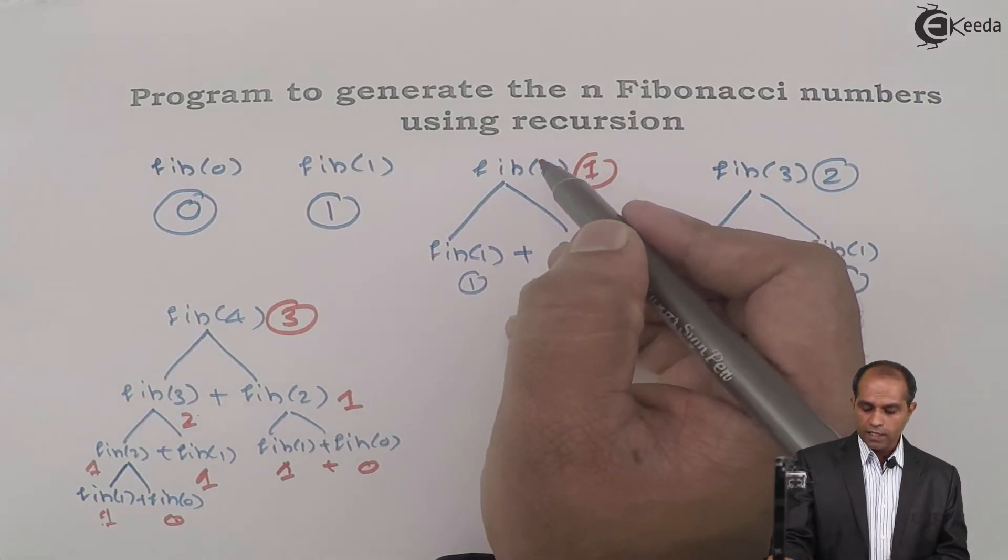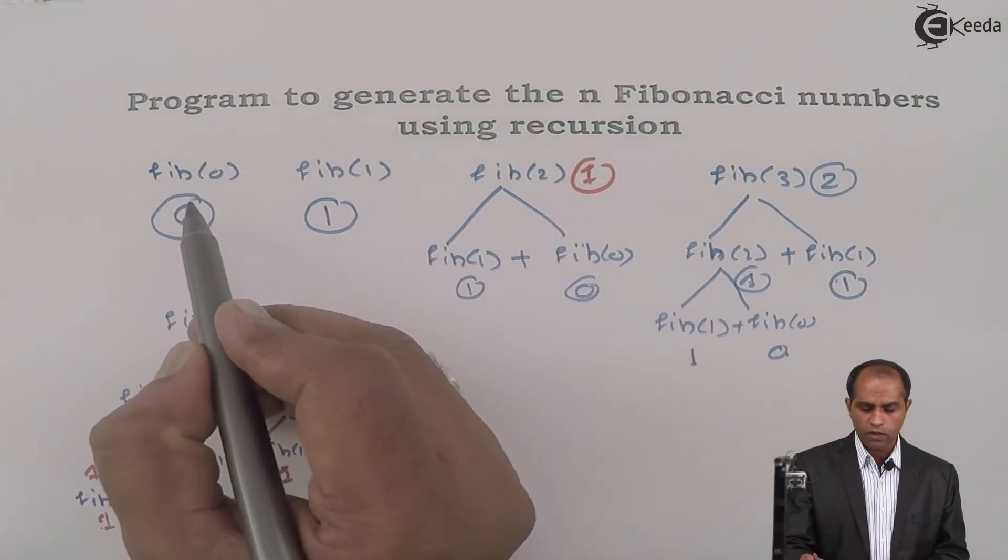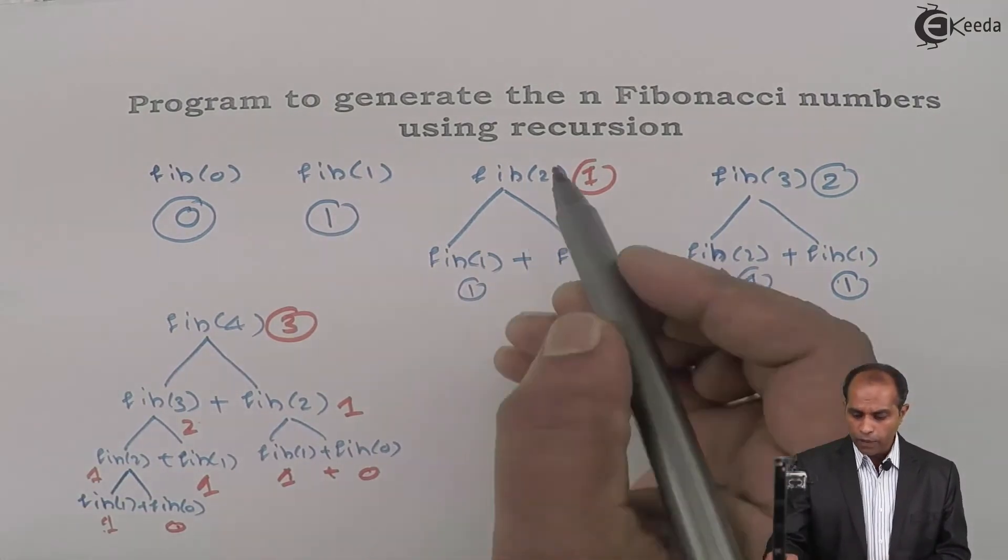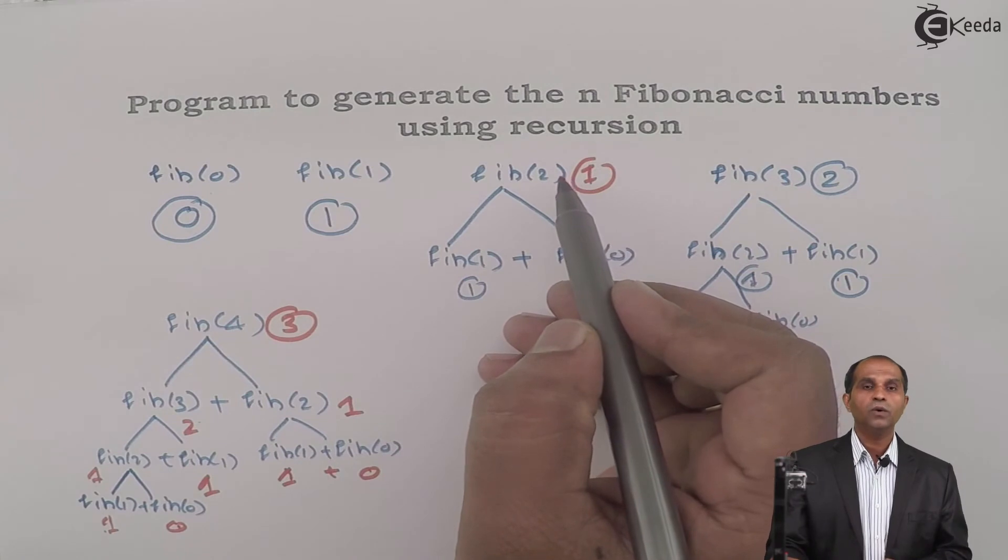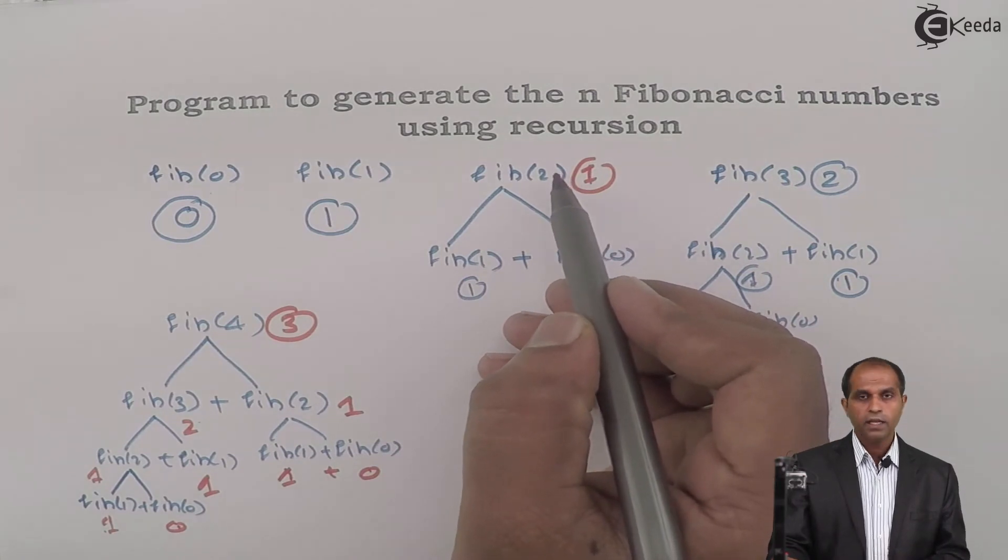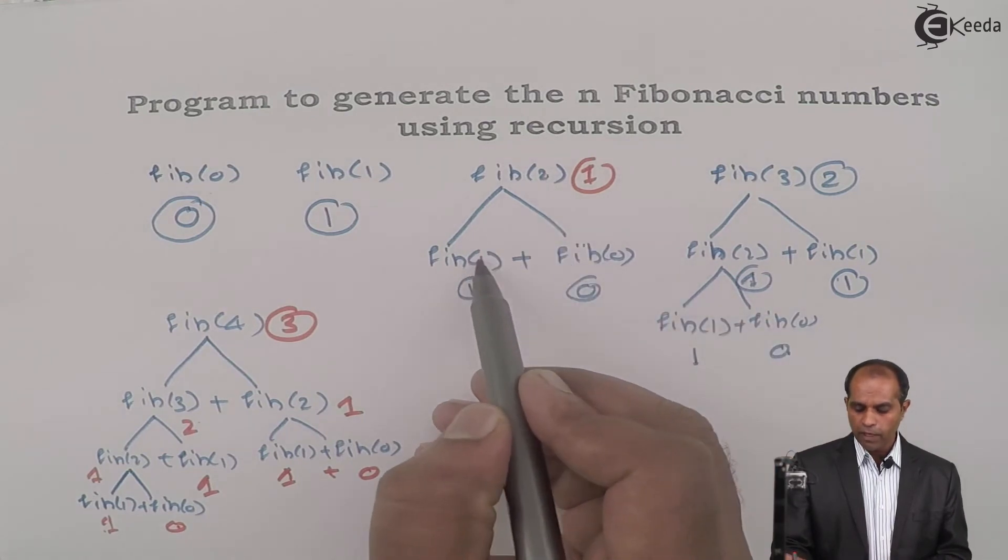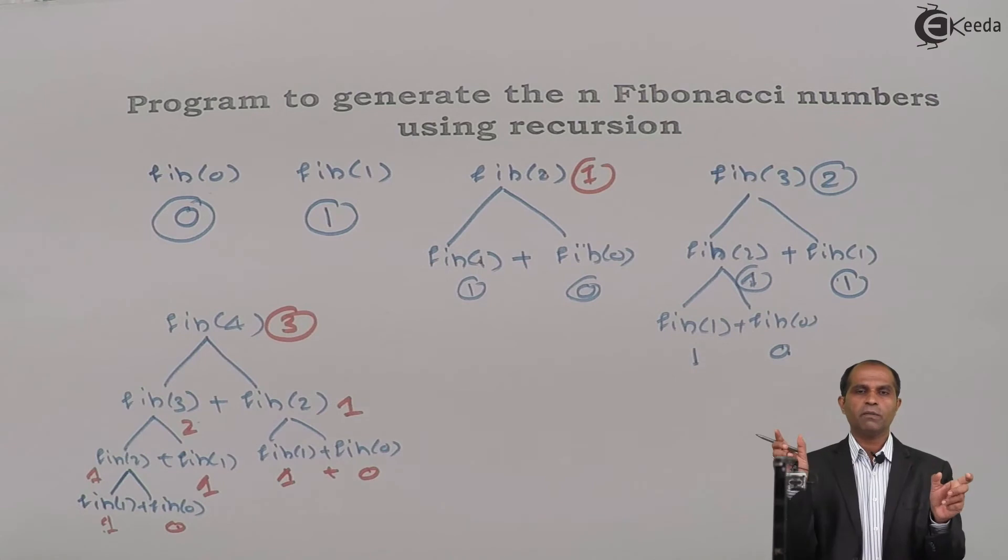You will check: is this n 0? If n is 0, then you'll say the answer is 0. Is this n 1? You'll say the answer is 1. But if n is anything apart from 0 and 1, you'll say that I don't know. But you'll find this if someone can get me Fib of n minus 1 and Fib of n minus 2. I can add n minus 1 and n minus 2 and give you Fib of n.